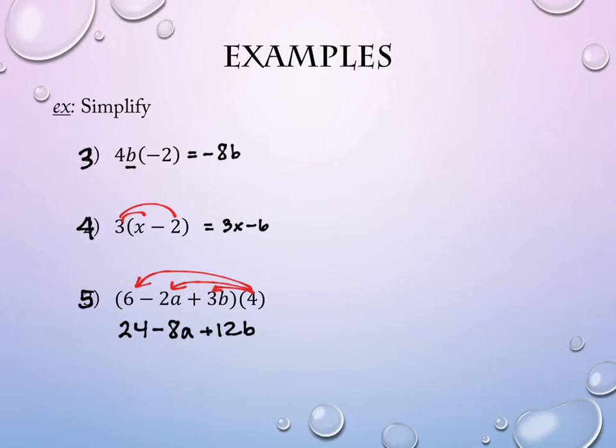There's no further simplification because none of those terms are like terms — one is a constant with no variable, one has A, and one has B.